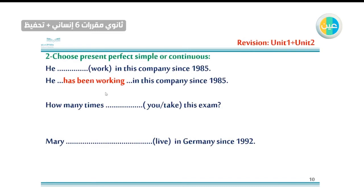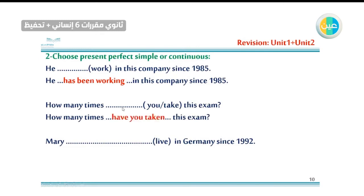'How many times you take this exam?' 'How many' is asking about quantity — a result. You are repeating an action. So 'how many times' means we are talking about present perfect, not continuous. How many times have you taken this exam?